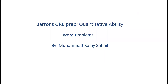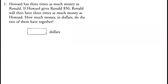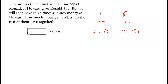Hello everyone, today we will be doing word problems. For the first question: Howard has three times as much money as Ronald. If Ronald has x, then Howard has 3x. If Howard gives Ronald 50 dollars, Howard would have 3x minus 50 and Ronald would have x plus 50. Now Ronald will have three times as much money as Howard.